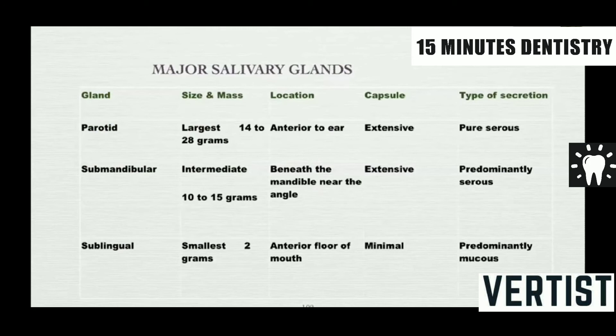Looking at the major salivary glands from a histology perspective: parotid glands are purely serous, submandibular glands are predominantly serous, and sublingual glands are predominantly mucous.